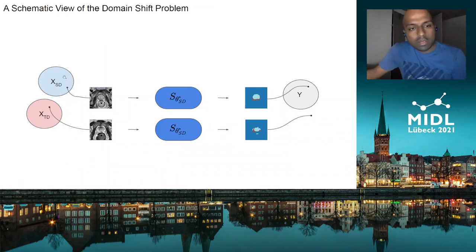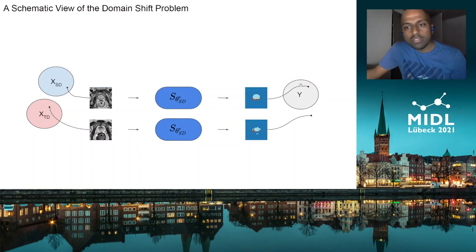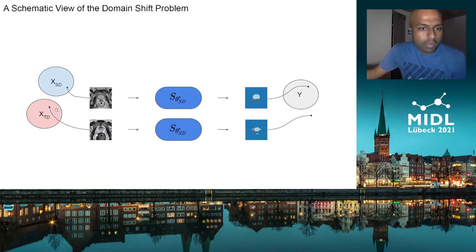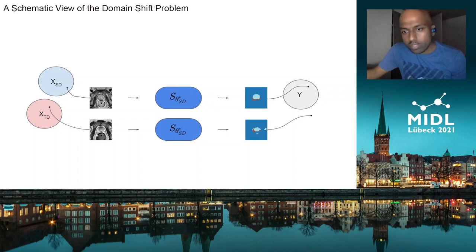Schematically, you have a ball of source domain images, and you use samples from this ball to train a network to produce segmentations which are points within the ball of good segmentations. When you have a target domain ball — a new hospital or scanner — the image passed through the mapping learned on the source domain will produce a segmentation with some problems: a point that lies outside the ball of good segmentations. This is the domain shift problem.